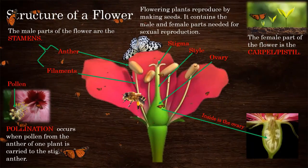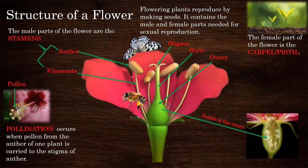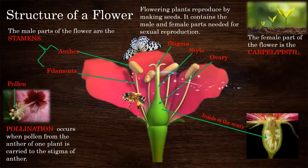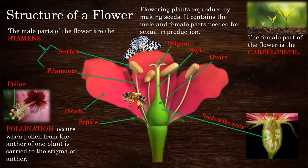Pollen is carried on insects' bodies, and some flowers like sunflowers are pollinated by wind. When the pollen unites with the female egg cell, fertilization has taken place. After this, the petals wither and the seeds grow in the ovary. When the seed grows, the ovary develops into a fruit. The petals and sepals dry up and fall from the ripening fruit.